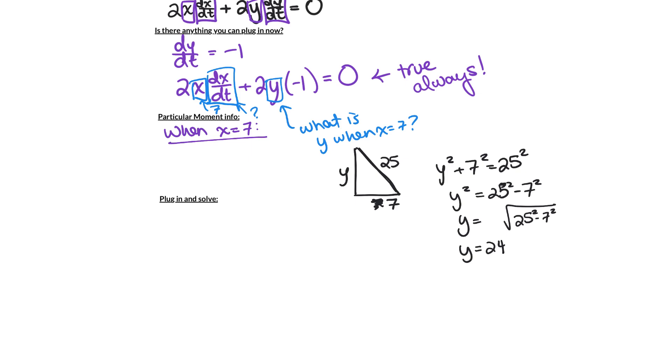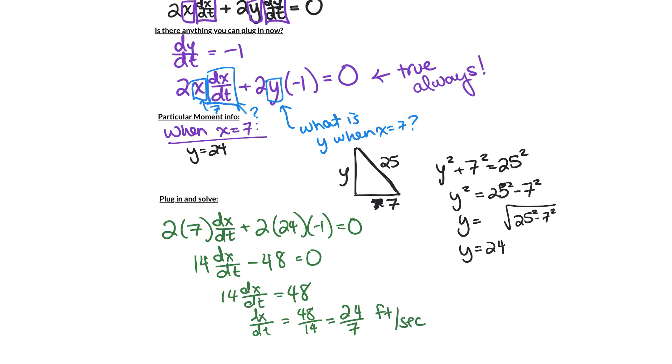And it turns out that that is 24. So when x equals 7, y equals 24, and so now we can plug in and solve. So we have that 2, x is 7, dx/dt is what we want to find, plus 2, y is 24, times negative 1 equals 0. And so 14(dx/dt) - 48 = 0, 14(dx/dt) = 48, and dx/dt equals 48/14, or 24/7. And this is going to be feet per second again, because dx/dt, x is measured in feet, and time is measured in seconds. And there we go. We've solved our first related rates problem.